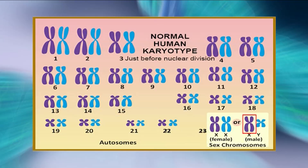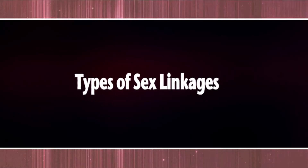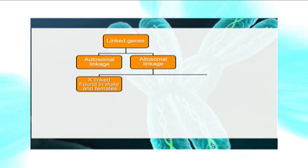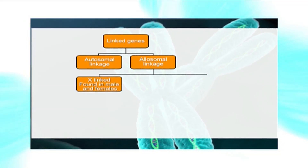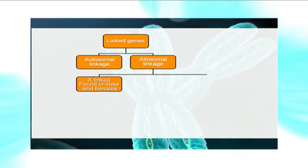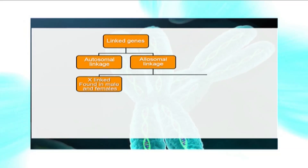From the karyotype, we can also see that the X chromosome is larger than the Y chromosome. Now having seen the karyotype of both males and females, let us talk about the types of sex linkages. The first type consists of genes located on X chromosomes, called X-linked genes. Since both males and females have an X chromosome, both have X-linked genes.